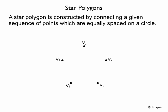A star polygon is constructed by connecting a given sequence of points which are equally spaced on a circle. For example, if we have a star polygon 5,2 — the 5, the first number or the top number, tells us how many points are equally spaced on a circle. The second number tells you to connect every second point.